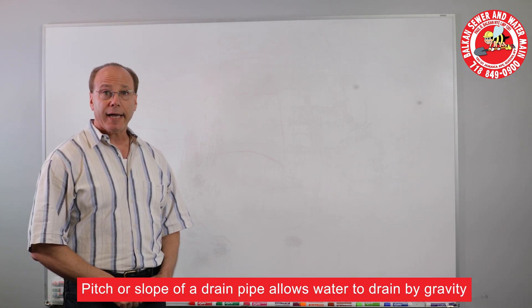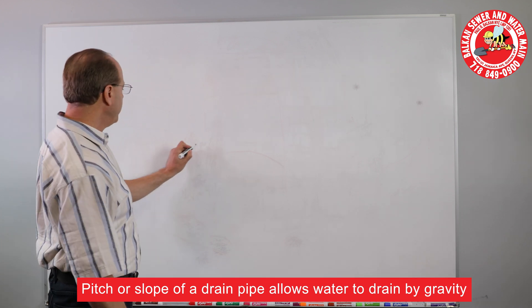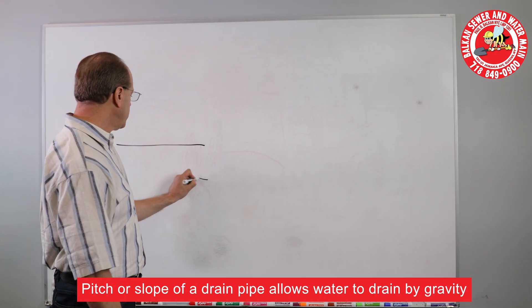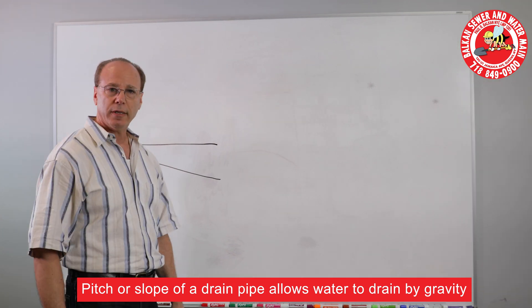Frequently people understand what pitch is in that if you have a drain pipe, nothing's going to drain out of it if it's level. It has to have some kind of a pitch to it.